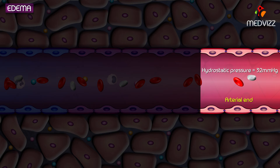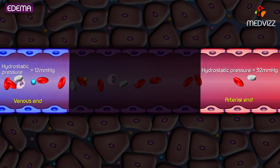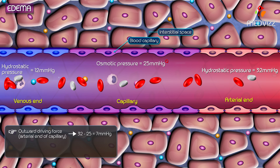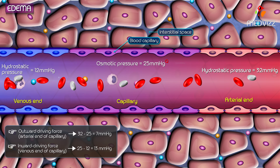At the arterial end of the capillary, hydrostatic pressure is 32 mmHg; at the venous end, it is 12 mmHg. The osmotic pressure of the capillaries is 25 mmHg. The outward driving force at the arterial end is 32 minus 25, equal to 7 mmHg. The inward driving force at the venous end is 25 minus 12, equal to 13 mmHg.